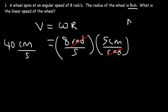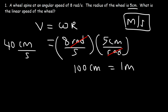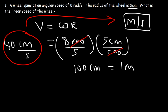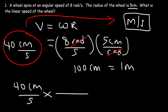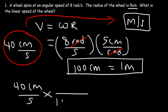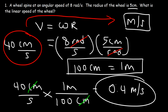A common unit for speed is meters per second, so let's convert. We know 100 centimeters equals 1 meter. Put centimeters on the bottom so they cancel, and 1 meter on top. 40 divided by 100 is 0.4, so the speed is 0.4 meters per second. Whether you write 40 centimeters per second or 0.4 meters per second, both are correct — but always identify your units.